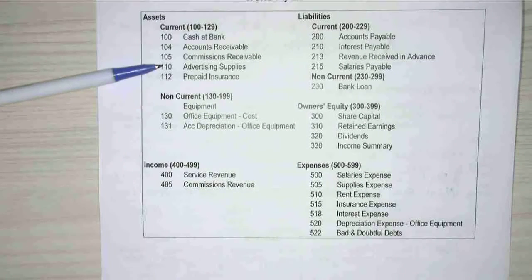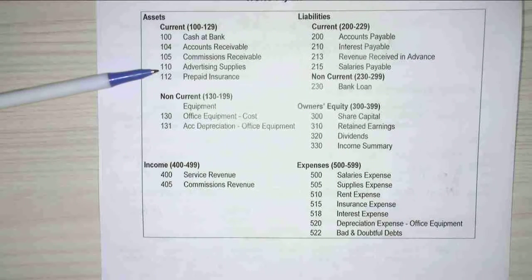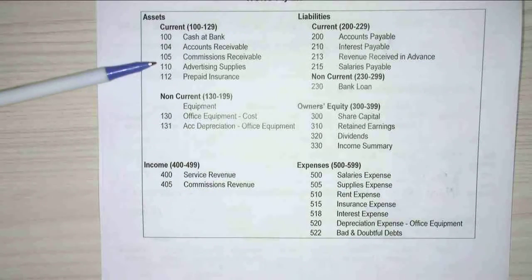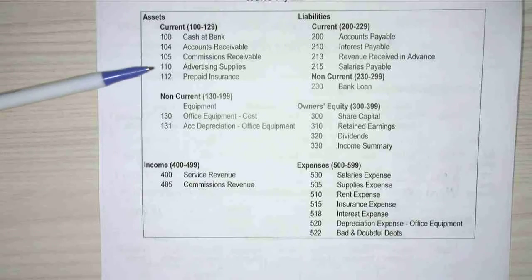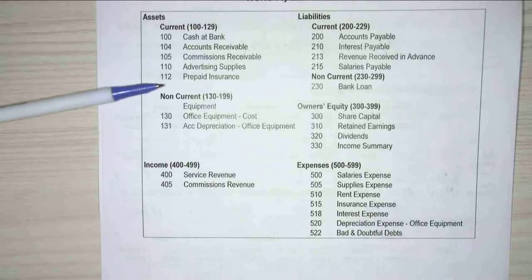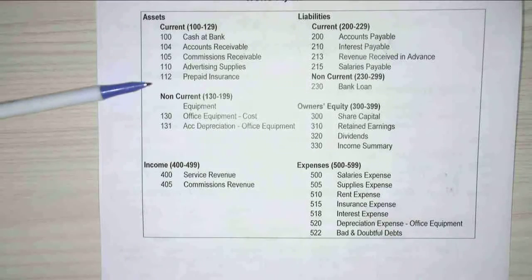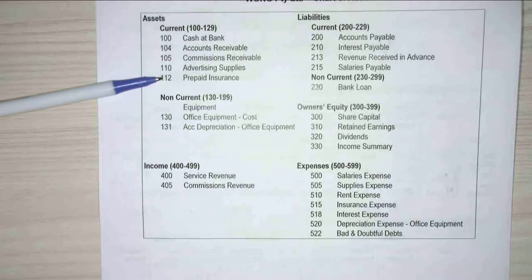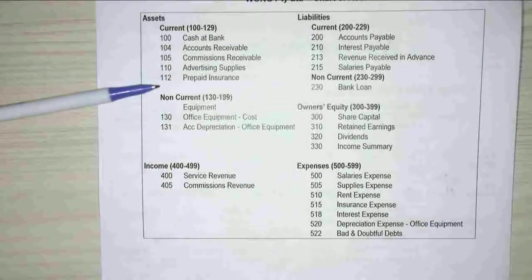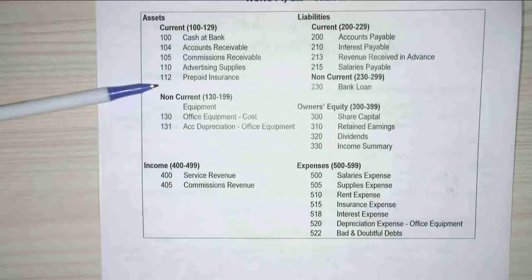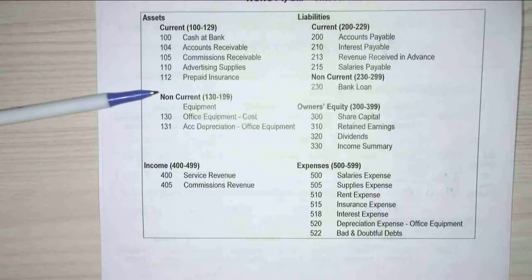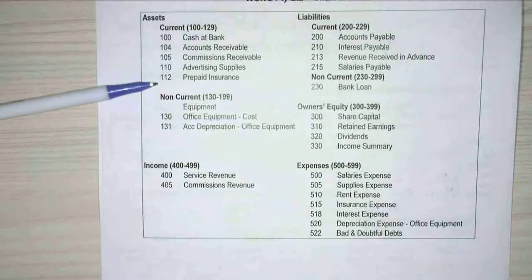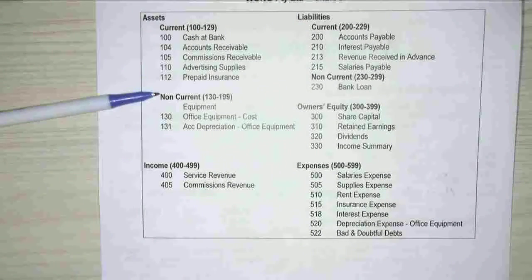Yeah, that's right. So there might be advertising supplies and maybe advertising products that we could put in there later. Or we might have prepaid insurance as 112, prepaid electricity, prepaid something else, which could be 112, 130, 140.